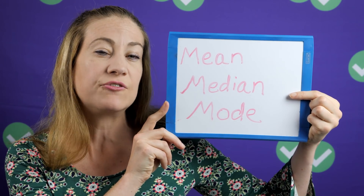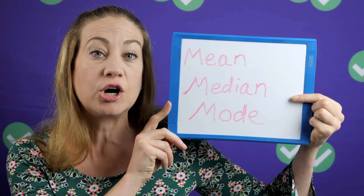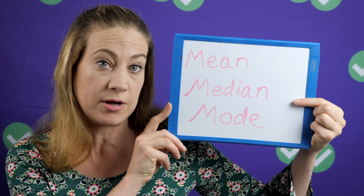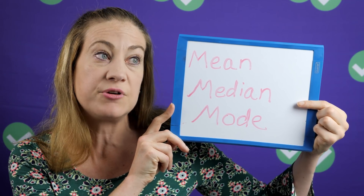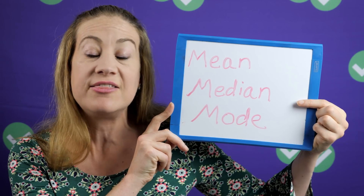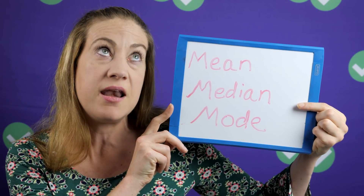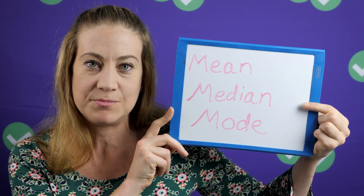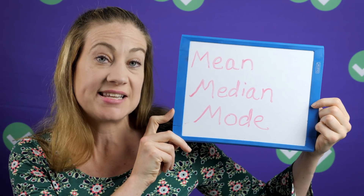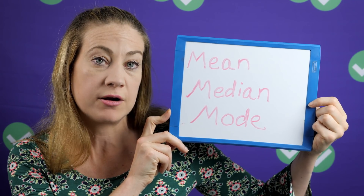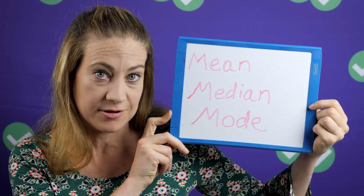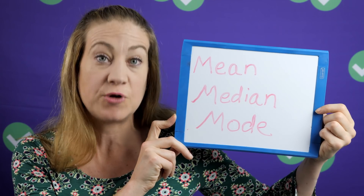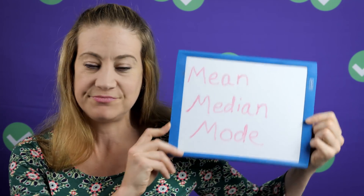And then last, we have the mode. The mode is the most frequently occurring number. Sometimes you have more than one mode, because you might have a number that occurs the same number of times as some other number — in that case, you would just have more than one mode.